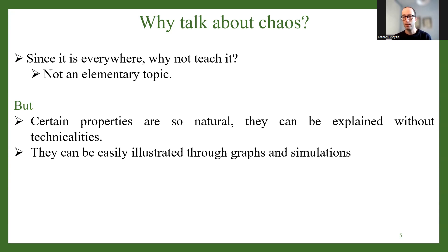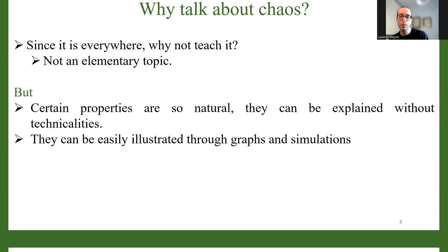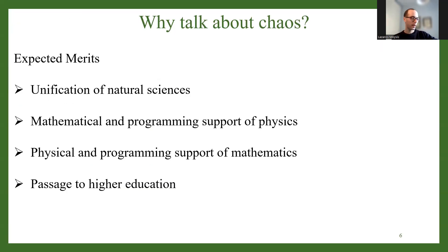There is an argument that can be made: since chaos is all around us, even if we don't really understand it, we are more familiar than we know with chaos, even from an earlier stage of life. Certain properties of chaotic systems are so natural that they can be explained without many technicalities. The approach we are considering is to try and explain some chaotic phenomena through examples, through graphs, through illustrations.